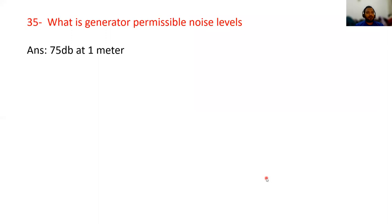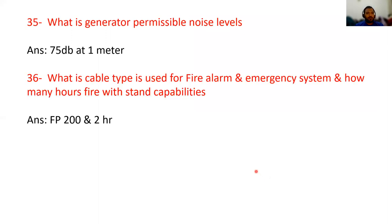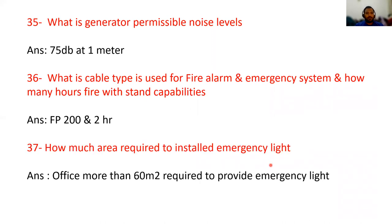Question 35: what is the permissible noise level for a generator? 75 decibels at 1 meter. What cable type is used for fire alarm and emergency systems, and what fire withstand capability is required? FP200 cable is used, with a minimum fire rating of 2 hours. How much area requires emergency lighting? Offices more than 60 square meters require emergency lights.